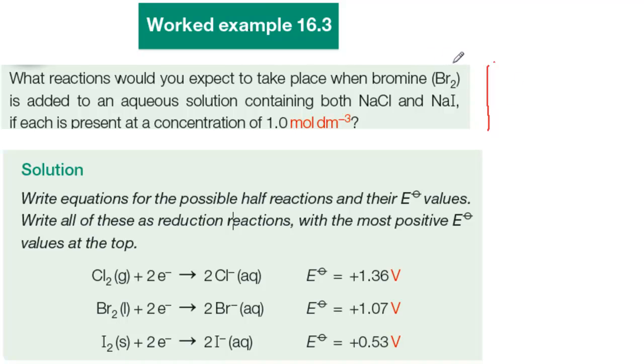We're being asked to predict what happens when Br2 is added to a solution that contains both Cl- ions and I- ions. Will Br2 oxidize Cl- to Cl2, or I- to I2? We're told that the concentrations are 1.0 moles per cubic decimeter, and that's standard concentration, so we can use the standard electrode potentials here.